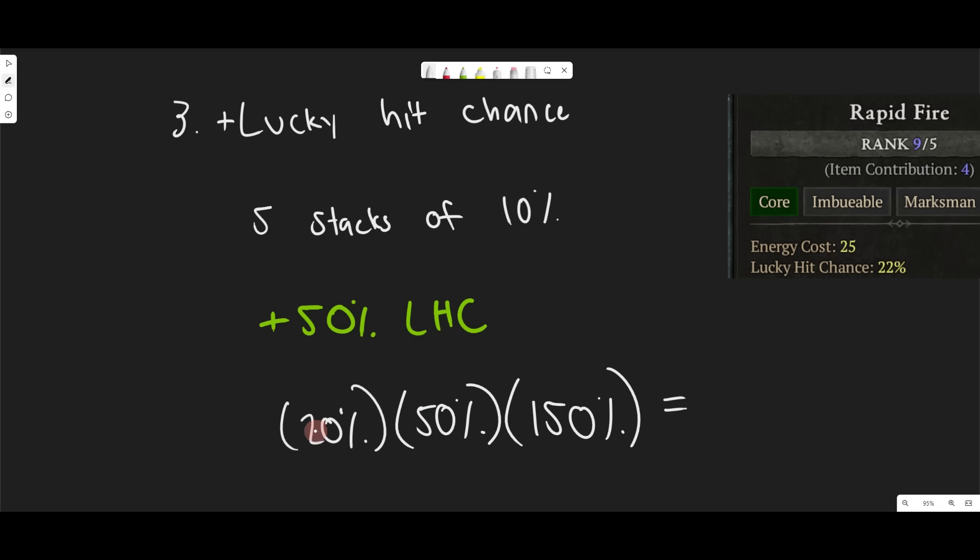Which then this would be equal to, well, 50% of 20% is 10% and 150% of 10% is 15%. So we get an extra 50% from what we had before, which was 10%. So before we had 10% and now it becomes 15% with 50% Lucky Hit Chance.